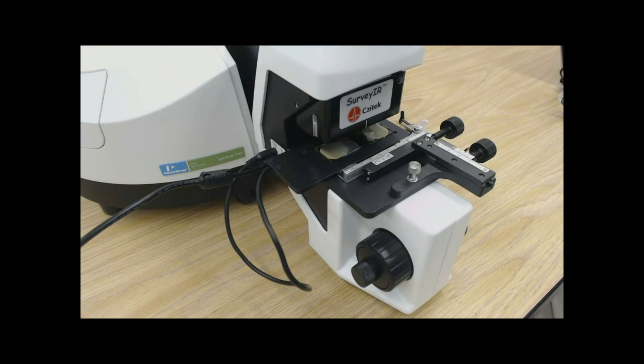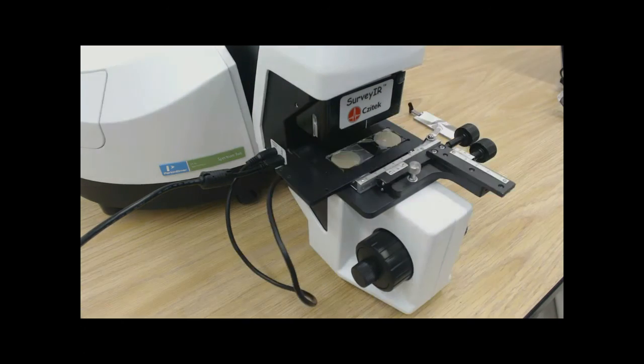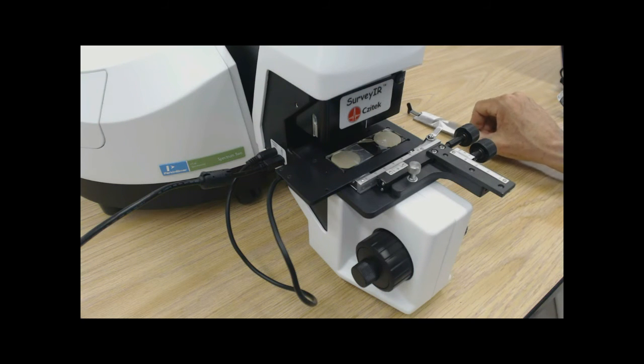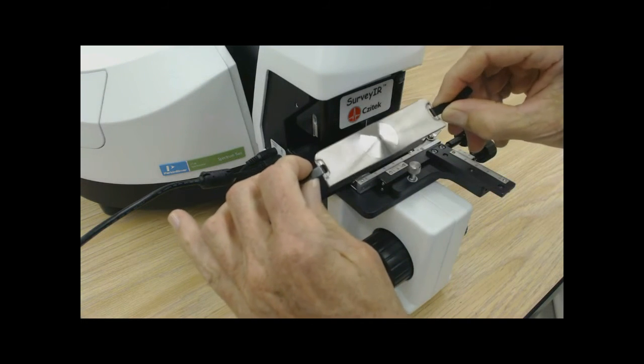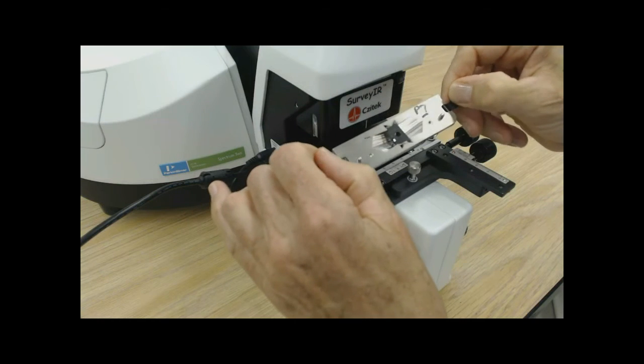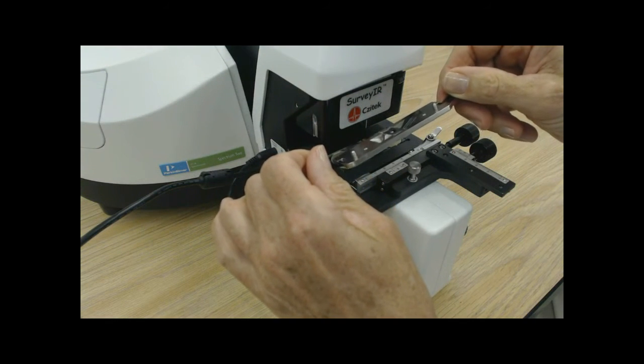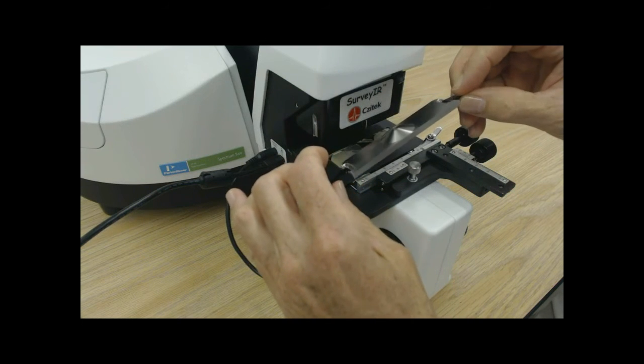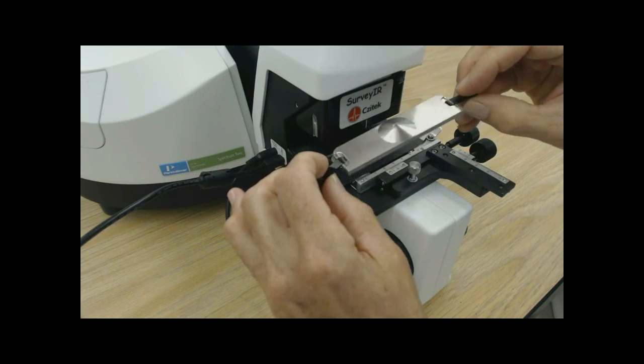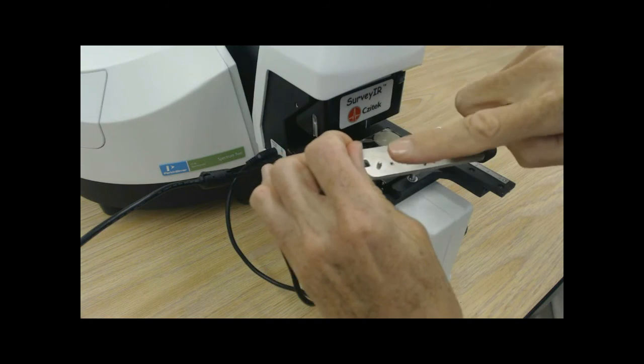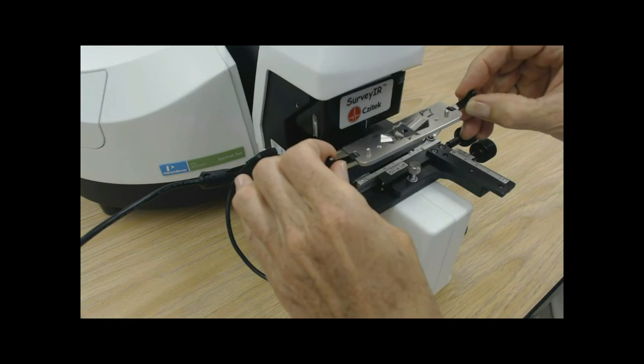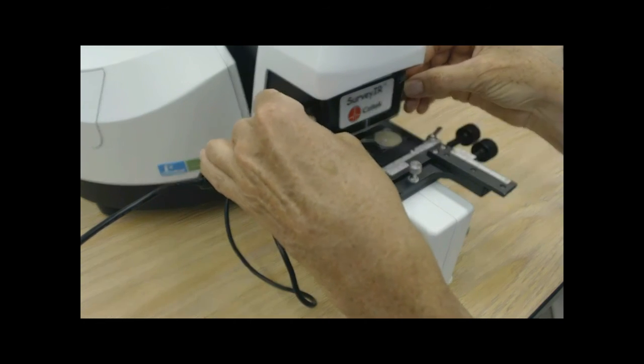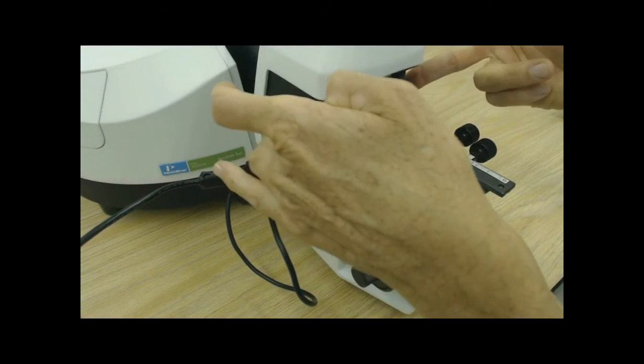Electrical and data connection is completed by connecting to your computer. For attenuated total reflection micro analysis, we will show you the installation of the Diamond ATR internal reflection element. The Diamond ATR element is secured into a stainless steel mount. It is optically and mechanically located by precision pins to the underside of the surveyor objective. Lastly, it is secured in place with swivel clamps.